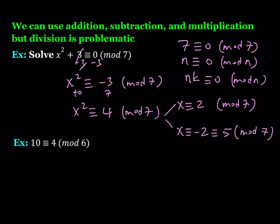When I say mod 7, you should always think about the finite set {0, 1, 2, 3, 4, 5, 6}, because these are all possible remainders upon division by 7. That's pretty much what we're dealing with.